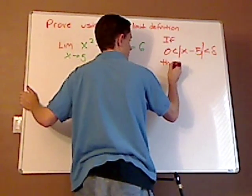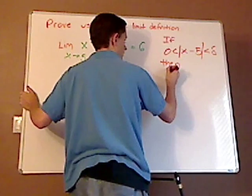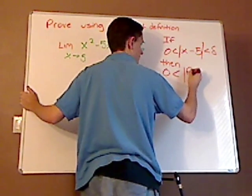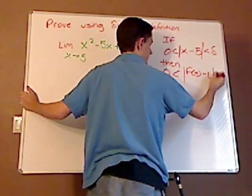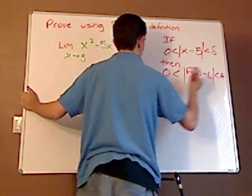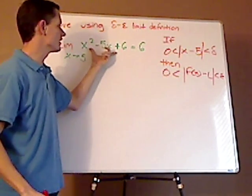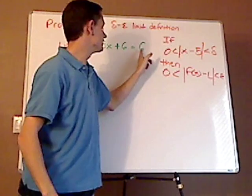then 0 less than the absolute value of f(x) minus the limit. I'm writing shorthand because this is rather long. f(x) is this whole thing right here, and your L is this.